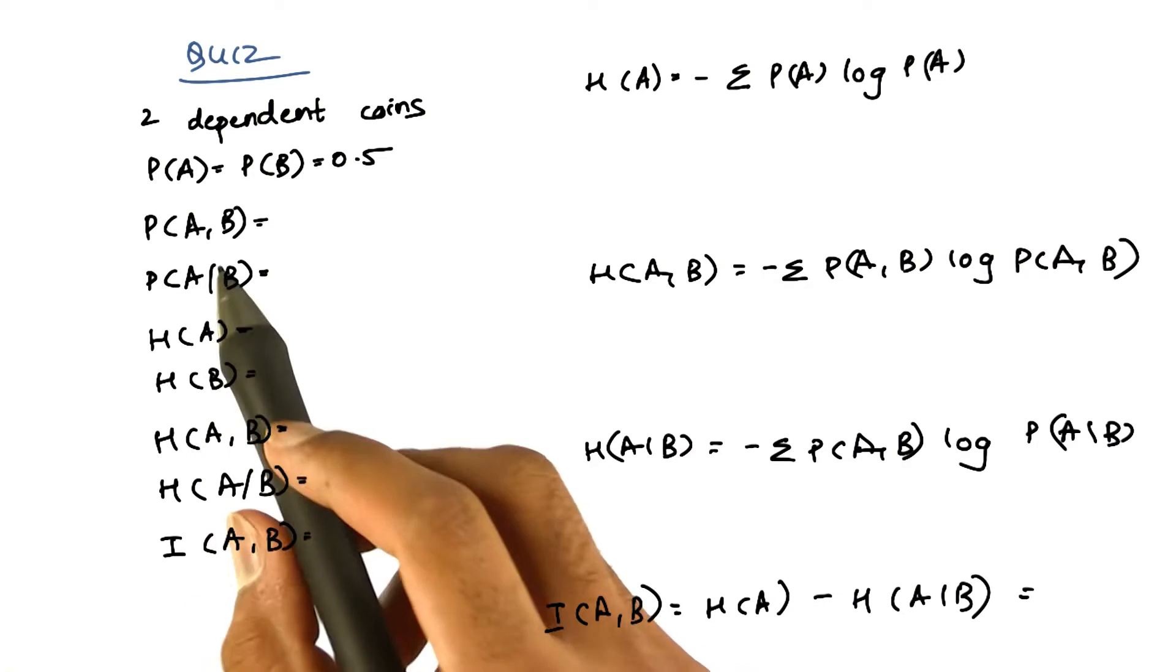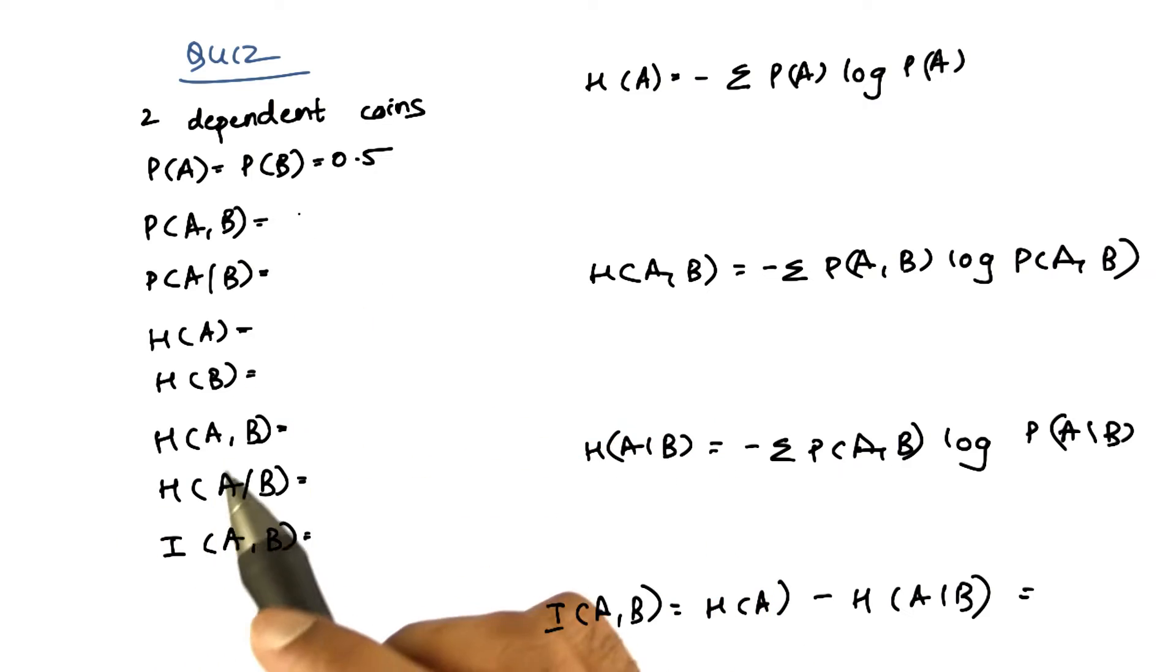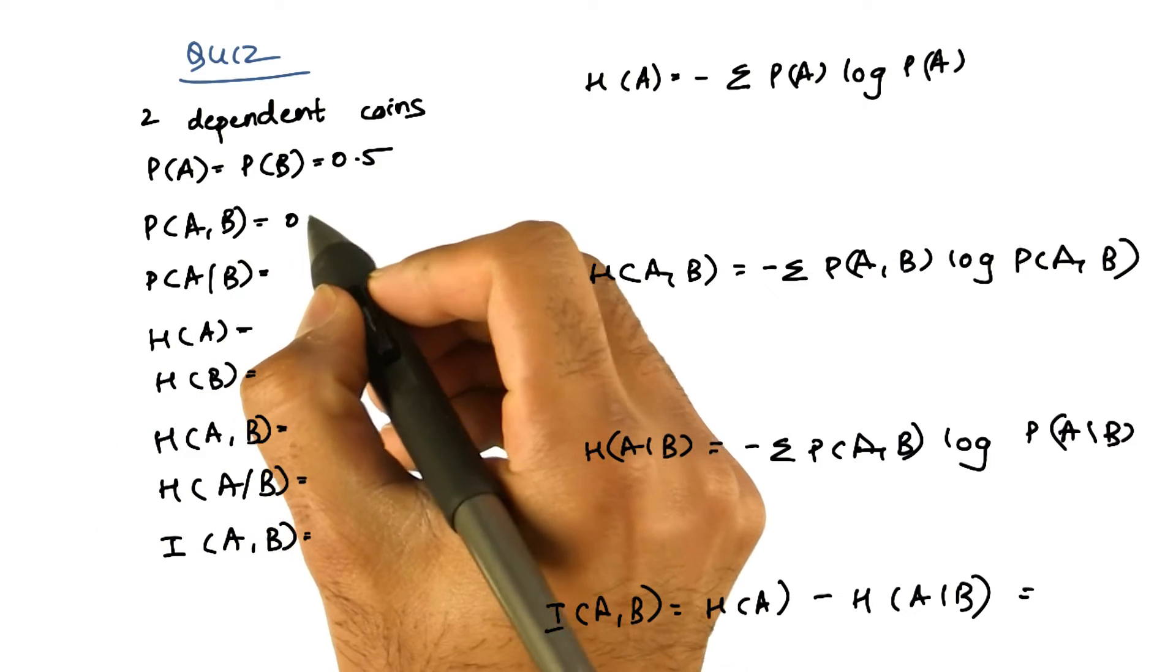Okay, so let's start with the joint probability. Now since A and B are both dependent on each other, there are only two possibilities. Both can be heads or both can be tails. So the joint probability is also 0.5.